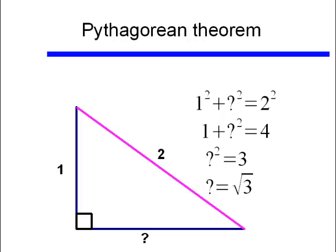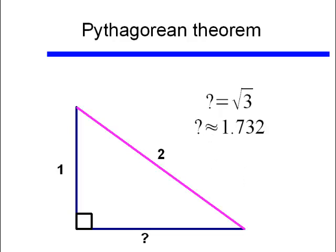Or, the length of that leg is the square root of 3. It's an exact answer. But if we wanted to approximate and round to the nearest three decimal places, we would get an approximate answer of 1.732.